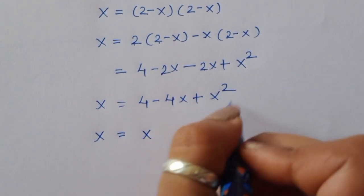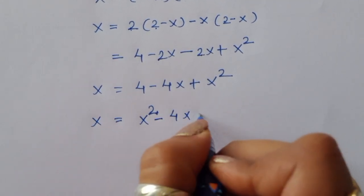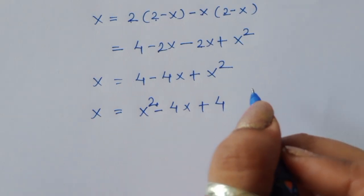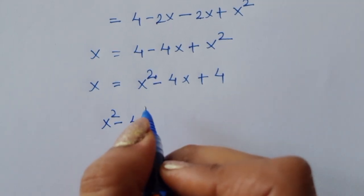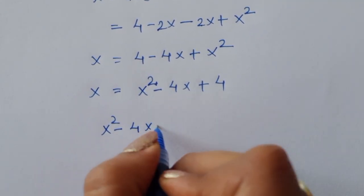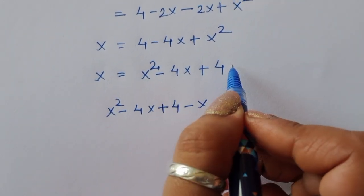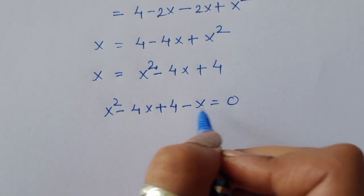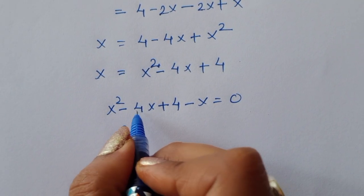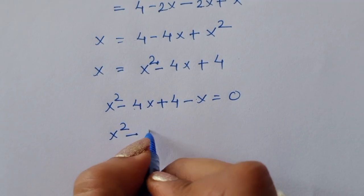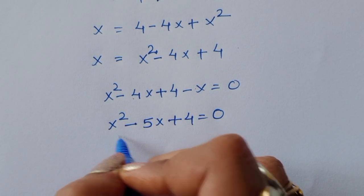So x = x² - 4x + 4. Bringing x to the right-hand side: x² - 4x - x + 4 = 0, which gives x² - 5x + 4 = 0.